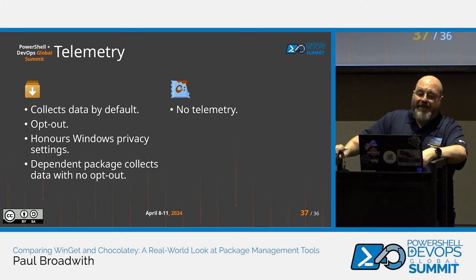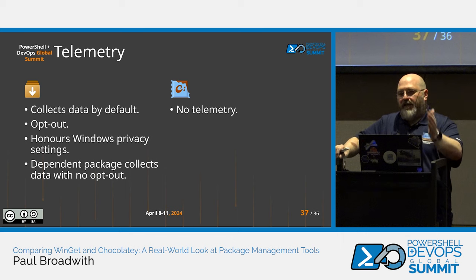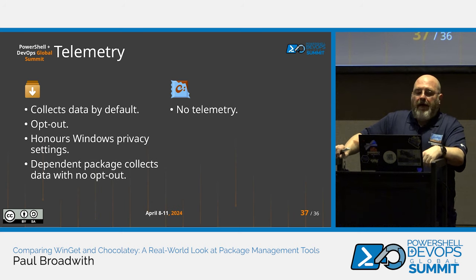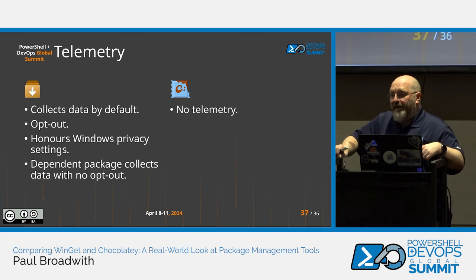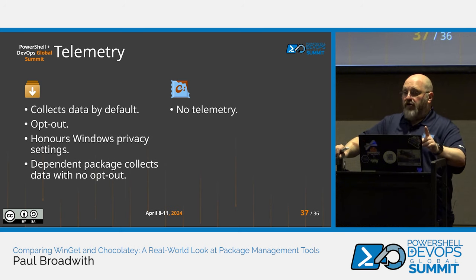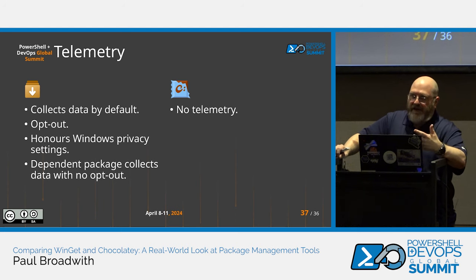WinGet collects data by default. There is an opt-out, and it apparently honors Windows privacy settings — though on Windows 10 you could previously only reduce to 'basic' data, not turn it off entirely, so you'd need to verify that. There's also a dependent package called 'Microsoft.UI.Xaml' that collects data with no opt-out — at least as of version 2.7.3. That's a problem: even if you're installing WinGet, that dependency is installed and still collecting data.